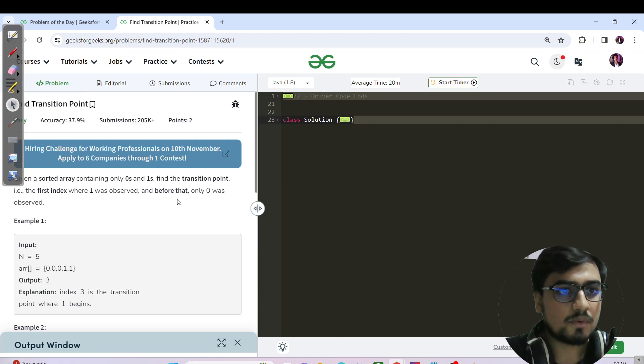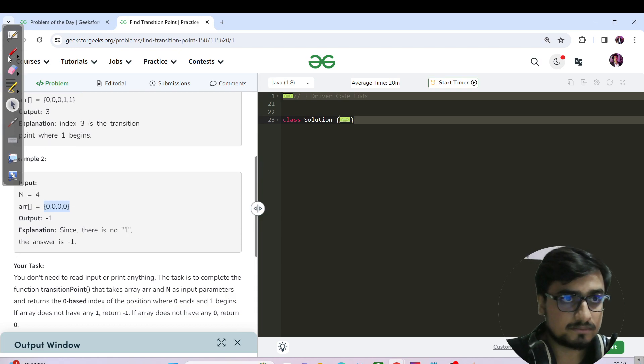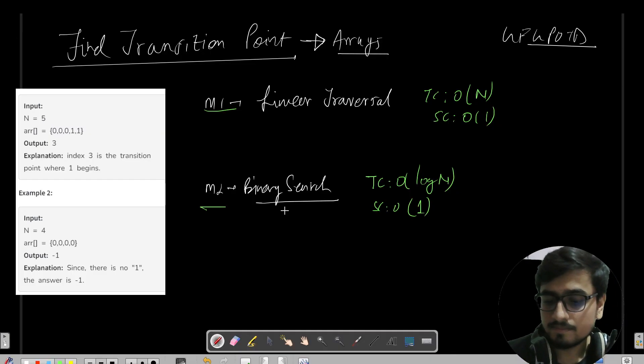The question name is Find Transition Point. We have been given a sorted array containing zeros and ones. We need to find the transition point - that is, we need to return the first index where one was observed, before that only zero was observed. So we need to return the index of first one. In the first example, the index is three, that's the answer. If there is no one present, then definitely return minus one.